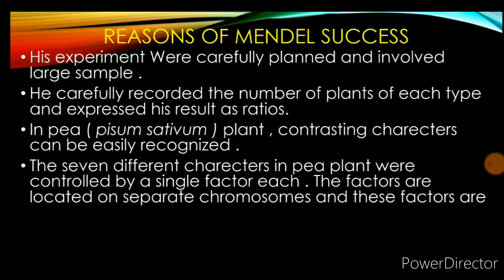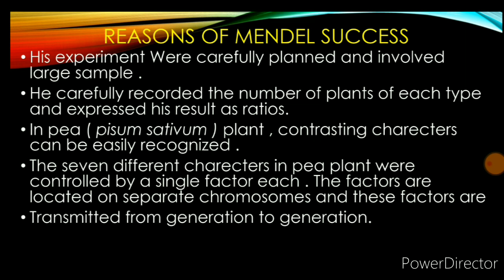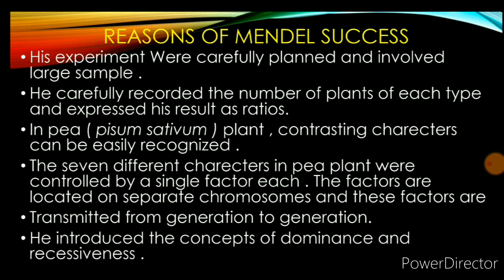The diploid number of chromosomes in pea plant is 14, and the haploid number is 7. Each of the 7 characters is controlled by a single factor located on each of the 7 separate chromosomes. These 7 factors are transmitted from generation to generation.